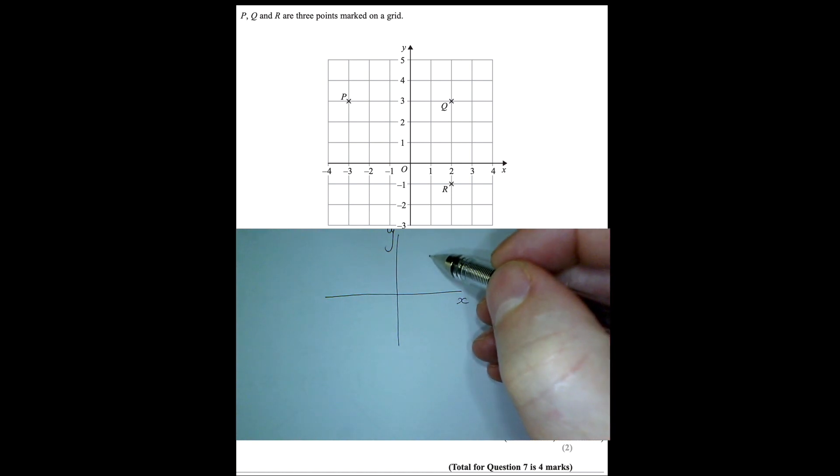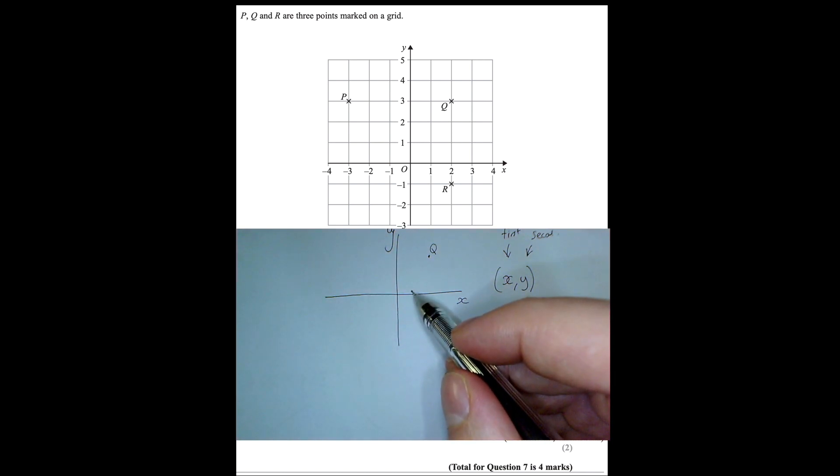So if you have a coordinate, let's say we were going to draw the coordinate Q, we would go along in the x direction first, and then go up in the y direction. So you always go along and then up, or backwards and then down, it's in that order. So your x is your first number in your brackets, and your y coordinate is the second one.